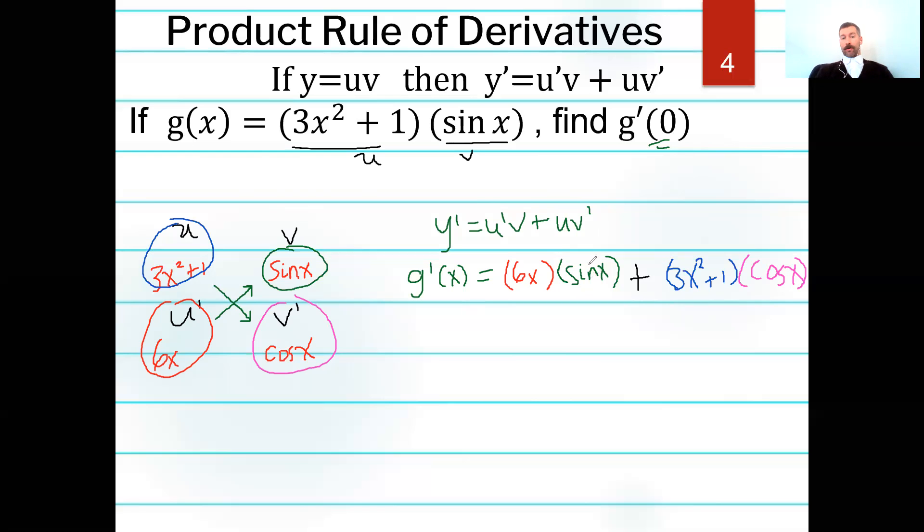All right, so now we have all of this. This is our derivative function. Now what we could do is we could distribute. We could write this as 6x sine of x to simplify this or condense it. And then here I got 3x squared, I got two terms and then one term, cosine of x. I'd actually distribute this way. And what I would have here is 3x squared cosine of x. And then cosine times 1 is just cosine of x. And I can look for like terms. So I have 3x squared plus cosine of x. This is really it. This is the best I can do. So with that being said, I'm actually going to use the factored form because I want to plug in zero. And the beautiful thing is I kind of like the organization of that.